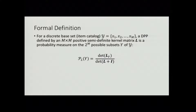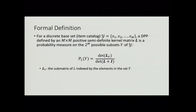Looking at the formal mathematical definition: we have a discrete base set or item catalog composed of M items. The DPP is defined by an M-by-M positive semi-definite kernel matrix L, which is a measure over all possible subsets drawn from that catalog — the power set. The probability of observing any particular set is proportional to the determinant of the submatrix drawn from L for the items in that set. The normalization constant is the determinant of L plus I, where L sub Y is the submatrix of L indexed by the elements in a particular set Y, and I is the M-by-M identity matrix.